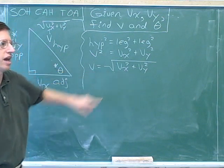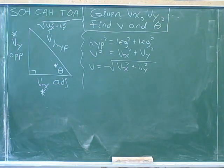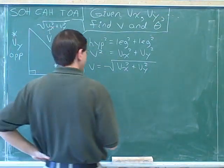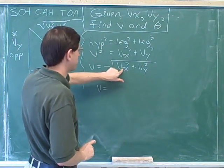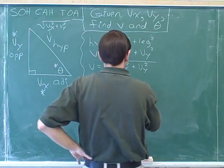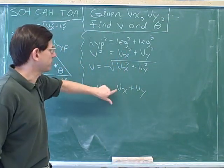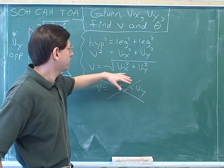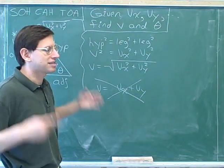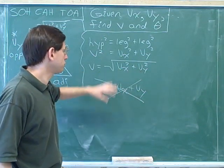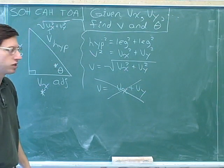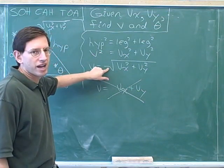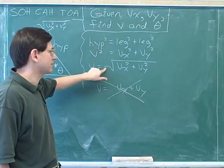Can we use algebra to simplify this right-hand side? The answer is no. It might have been tempting to say the square root of v sub x squared is v sub x, and the square root of v sub y squared is v sub y, so you might want to simplify to v sub x plus v sub y — but this is wrong. Square roots cannot be separated over addition. If you have a sum inside a square root, you can't just take those two square roots separately. There's no way to simplify this square root.